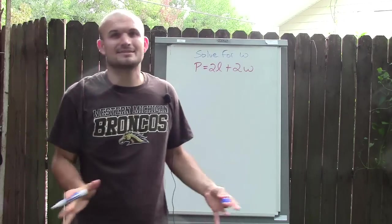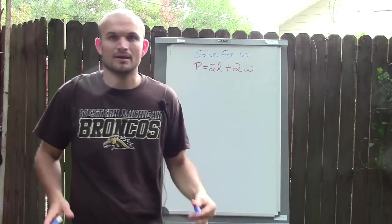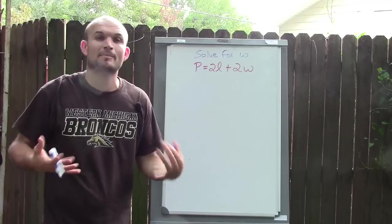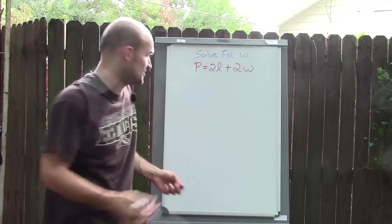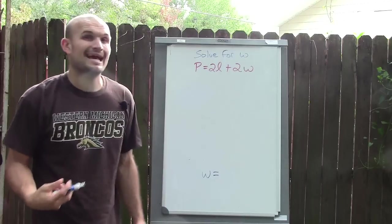Okay, so I know that's difficult because we have P and L and W and they only want us to solve for W, but there's a couple things to remember. Whenever we're saying solve for W, that means I want W to equal something at the end.